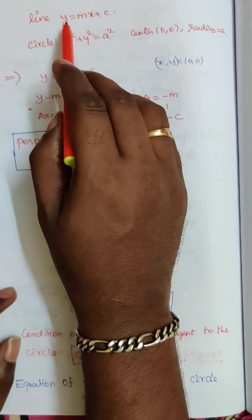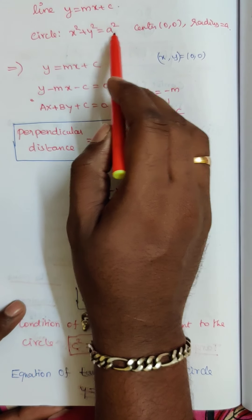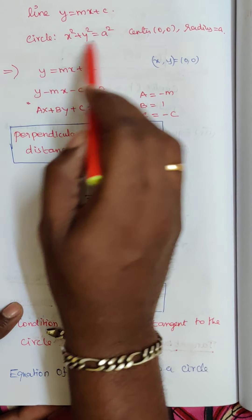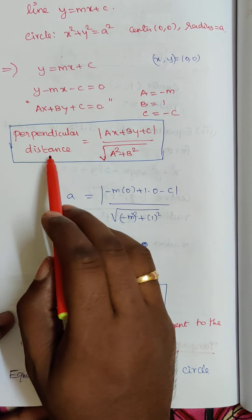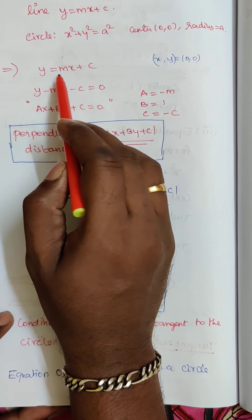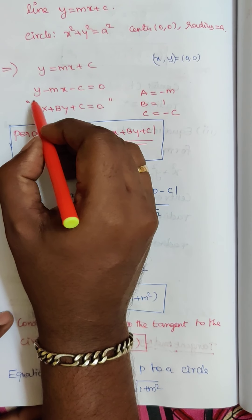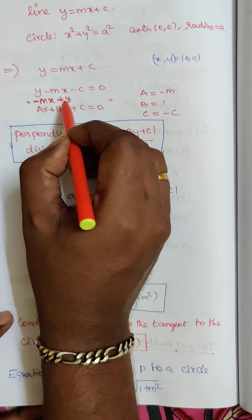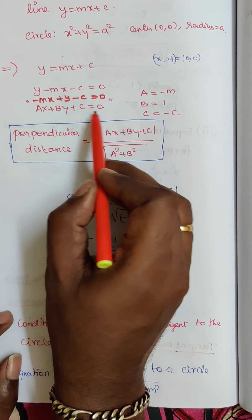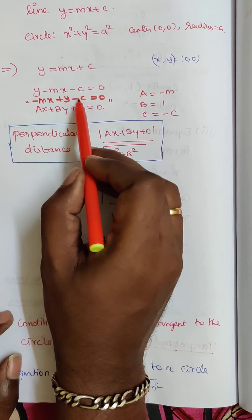Given the tangent line y equals mx plus c and the circle x squared plus y squared equals a squared, with center (0, 0) and radius a, we will use the perpendicular distance formula. Rewriting the line as minus mx plus y minus c equals 0, this is in the form Ax plus By plus C equals 0, where A equals minus m, B equals 1, and C equals minus c.